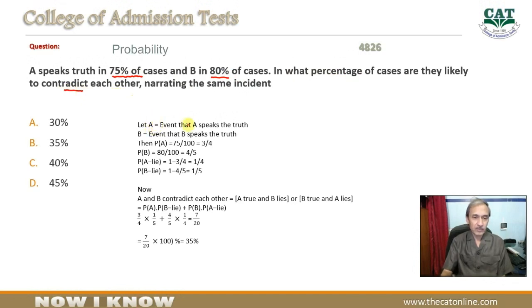Abh hum suppose karte hai ke A, event that A speaks truth. A jo hai woh represent karta hai jab A sach bolta hai aur B represent karta hai jab B sach bolta hai. Toh probability of A is 75% is equal to 3 by 4 aur probability of B is 4 by 5. Agar A 3 by 4 sach bolta hai toh 1 minus 3 by 4...